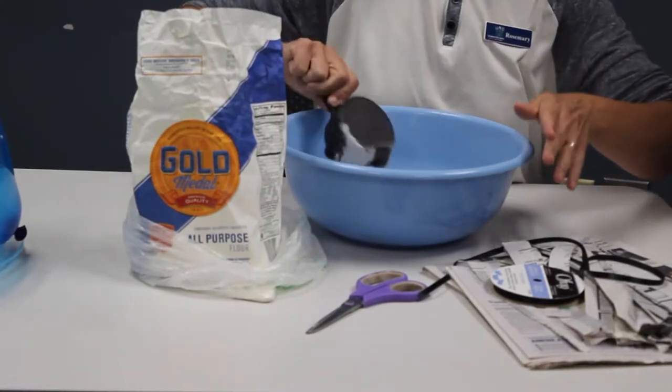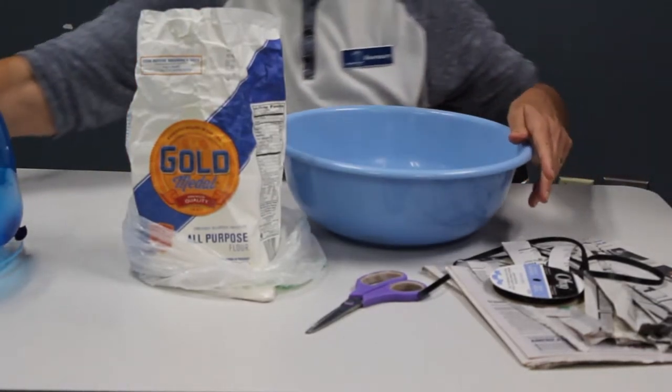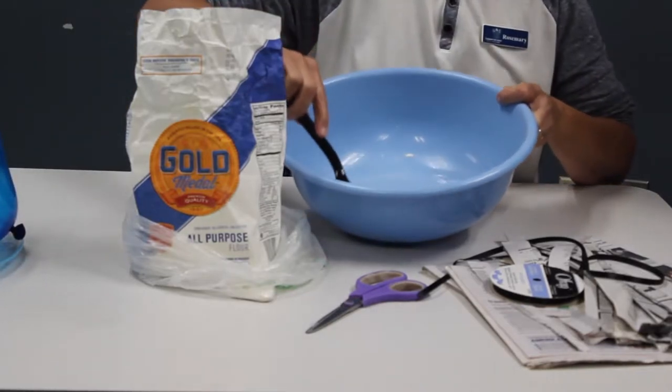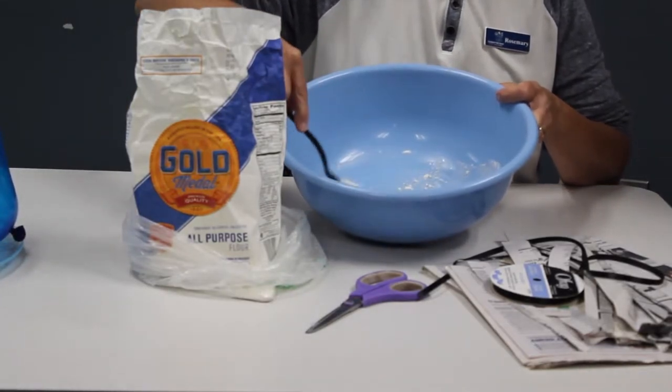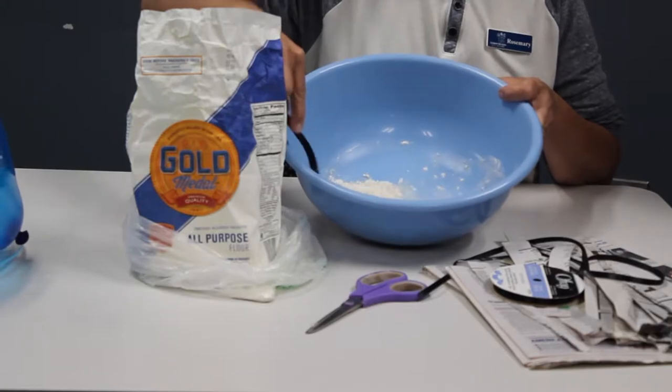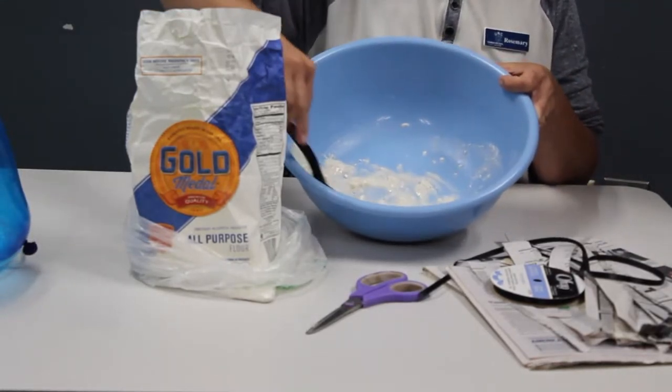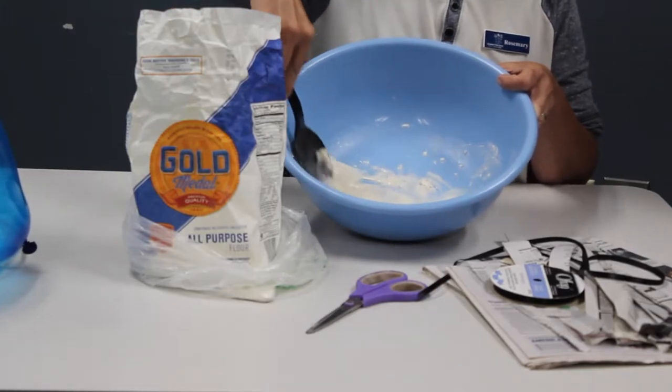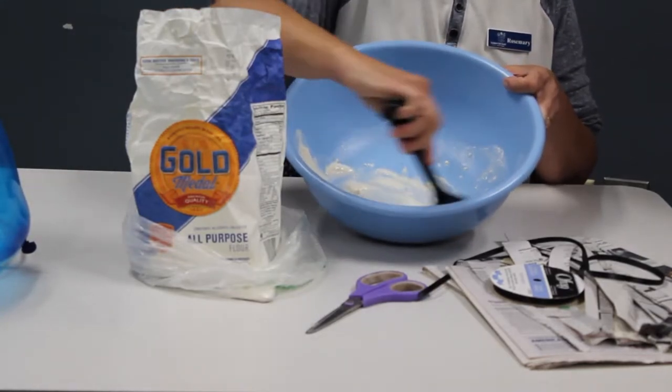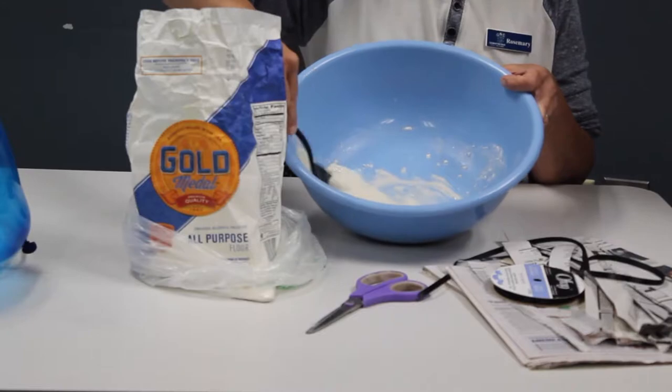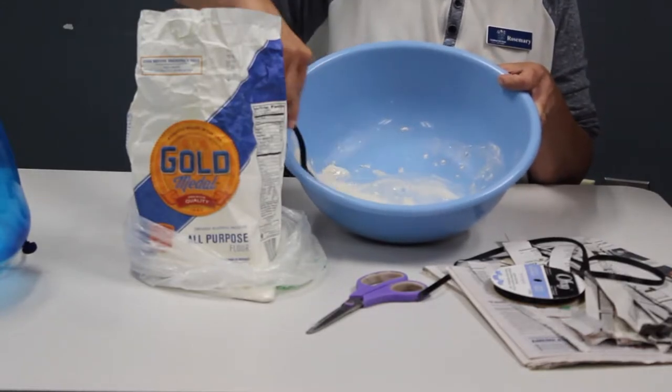So you just want to mix that up so there are no more lumps. It's going to make a paste that you're then going to be able to dip the newspaper strips in to cover the balloon.